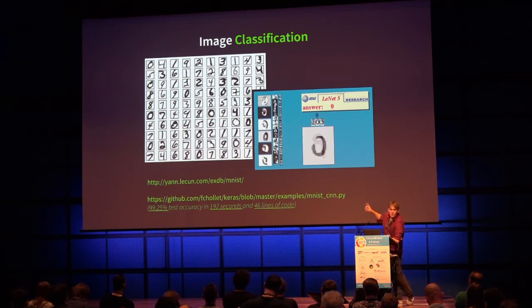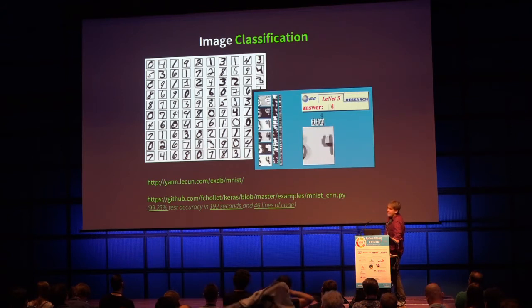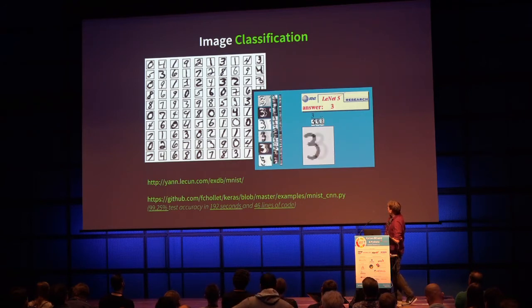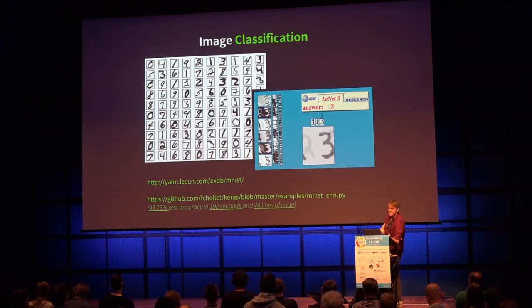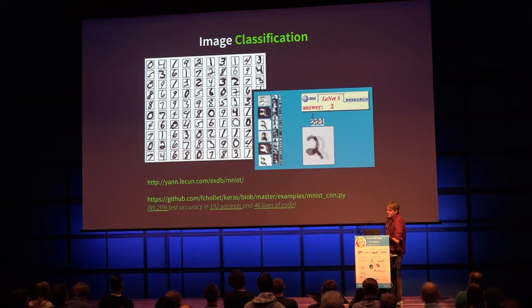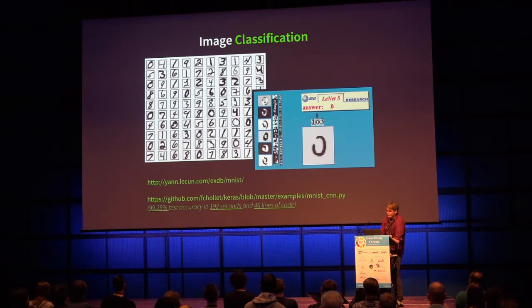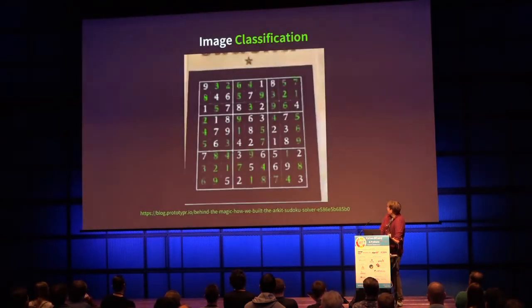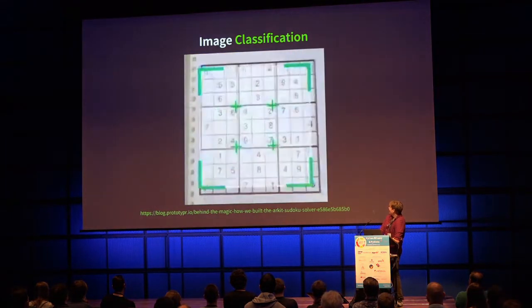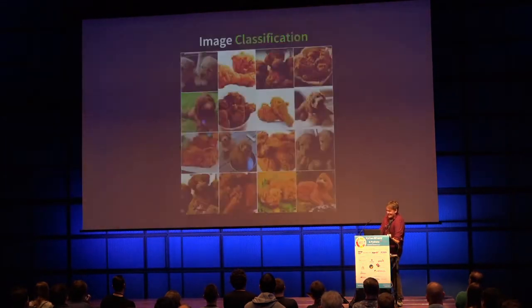The gif on the right is from LeCun — Yann LeCun, one of the godfathers of deep learning at AT&T in the 90s — used to recognize digits on postal codes on letters, because previously people were manually sorting letters. That was state-of-the-art back then. Now you can get 99.25% test accuracy in about three minutes and 46 lines of code with Keras.